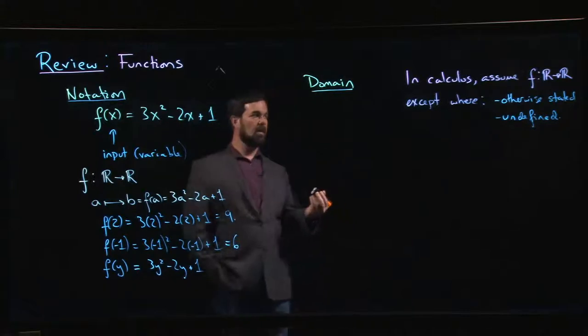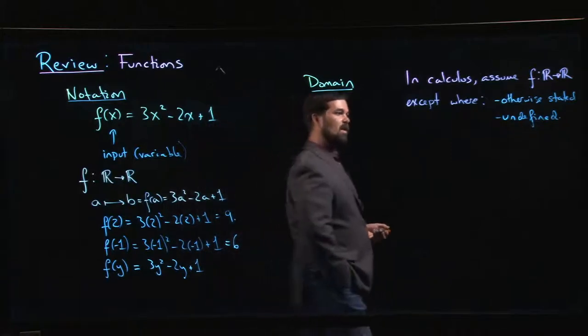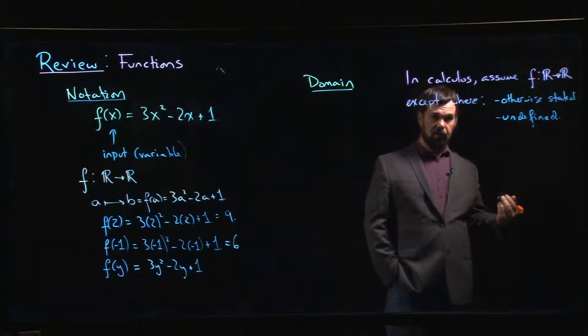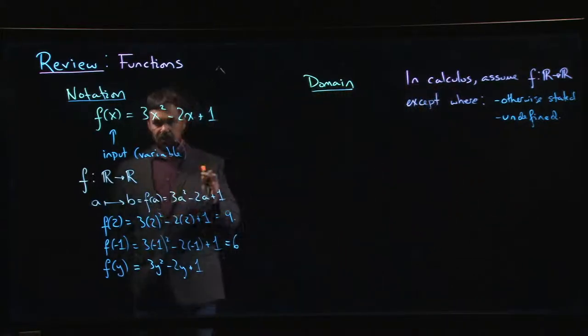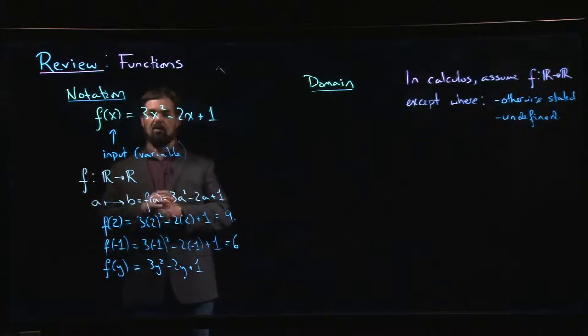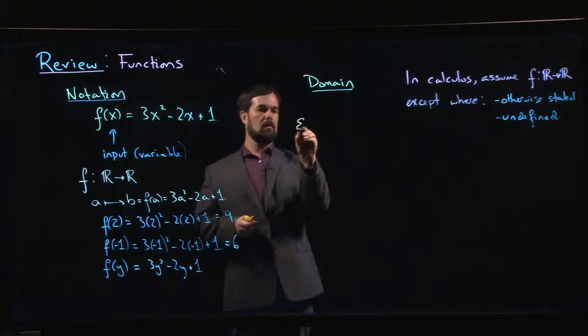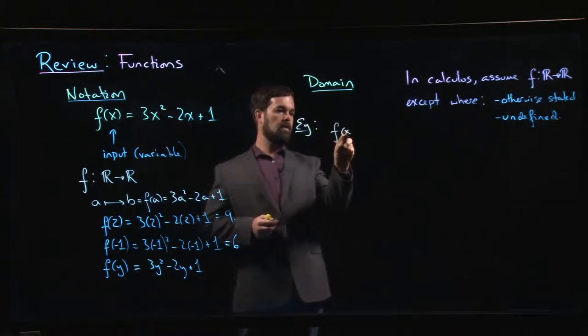But most of the time the domain is left implicit, and if the domain is not specified then you check to see if there are any values where your function is undefined. So if you've got something like a polynomial function like this quadratic, it's defined for every possible value of x, so the domain is indeed truly R—it's all real numbers. But maybe you're dealing with a rational function.